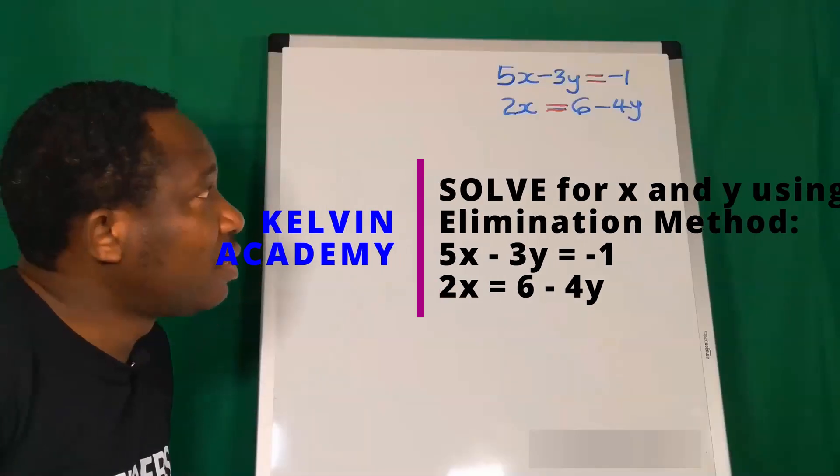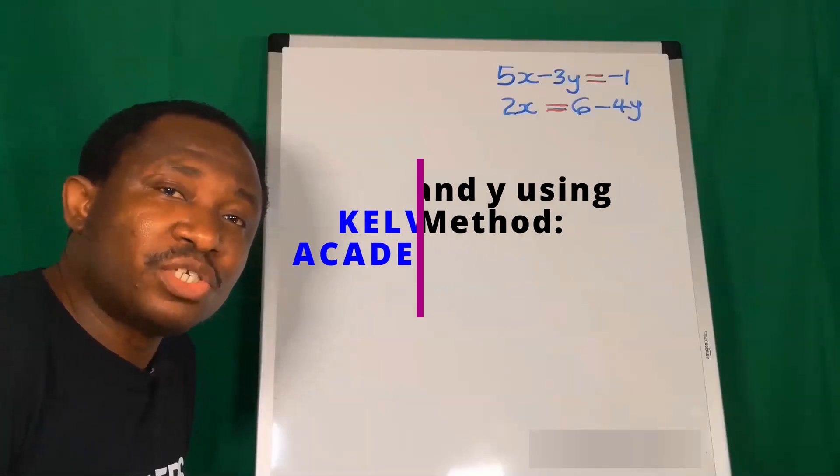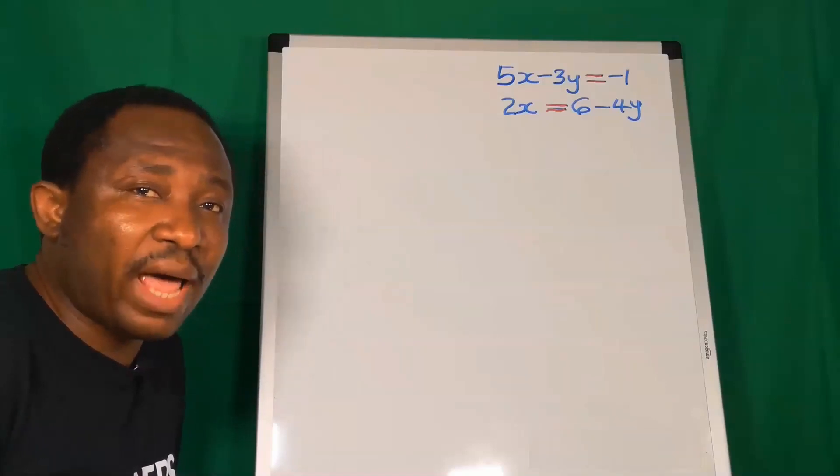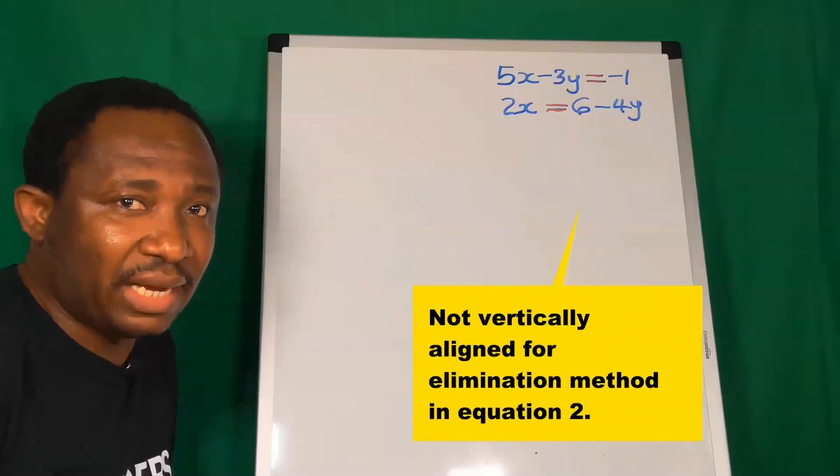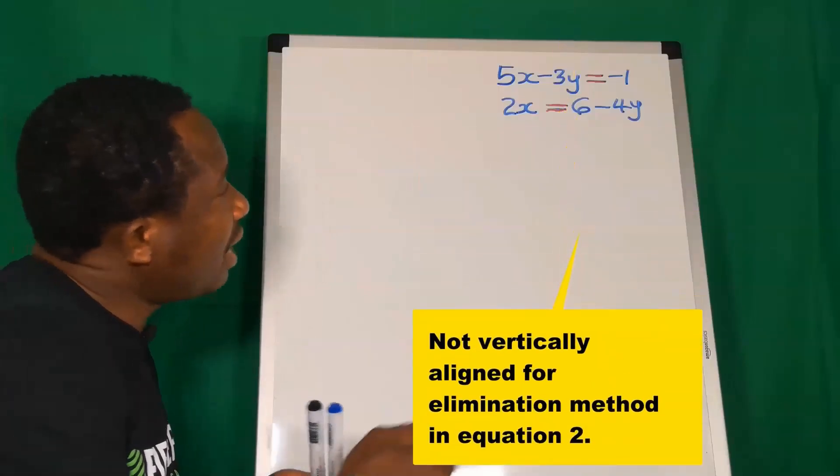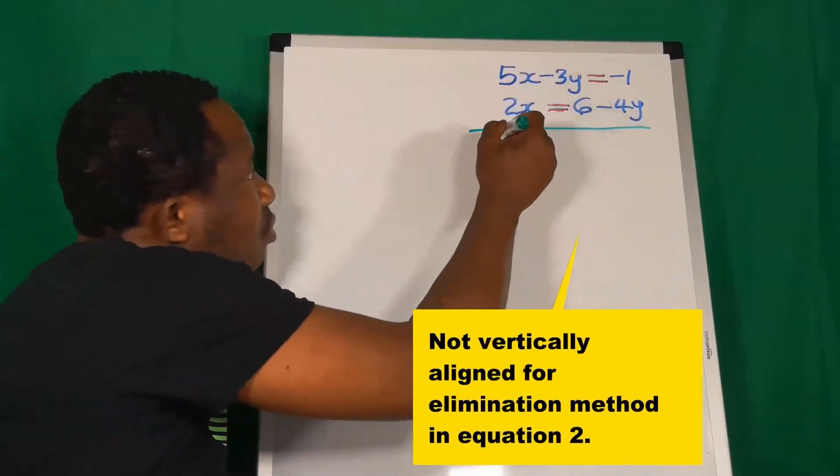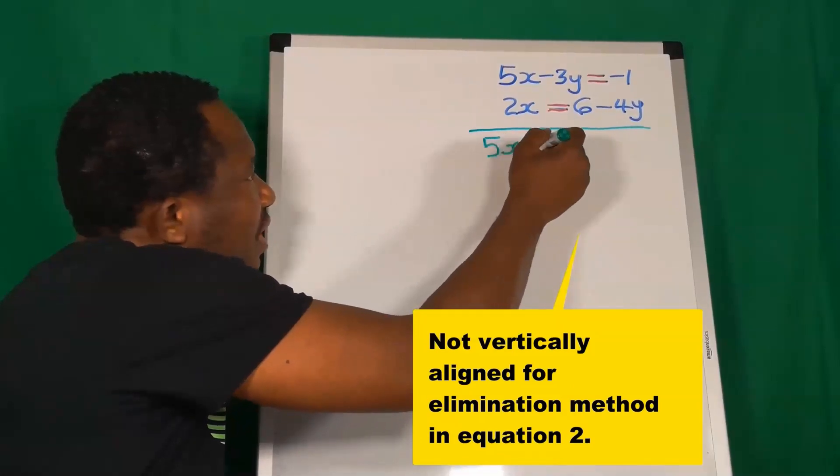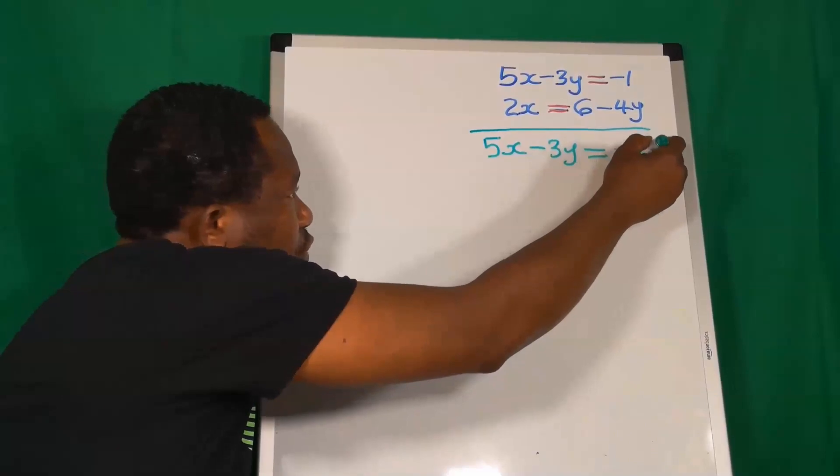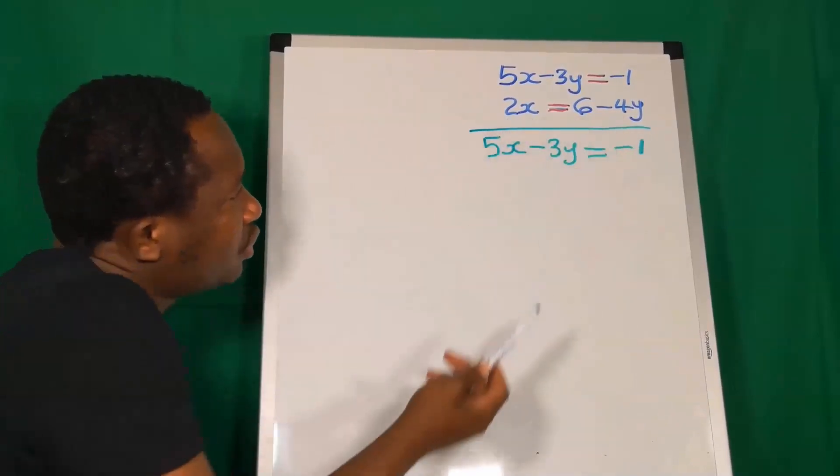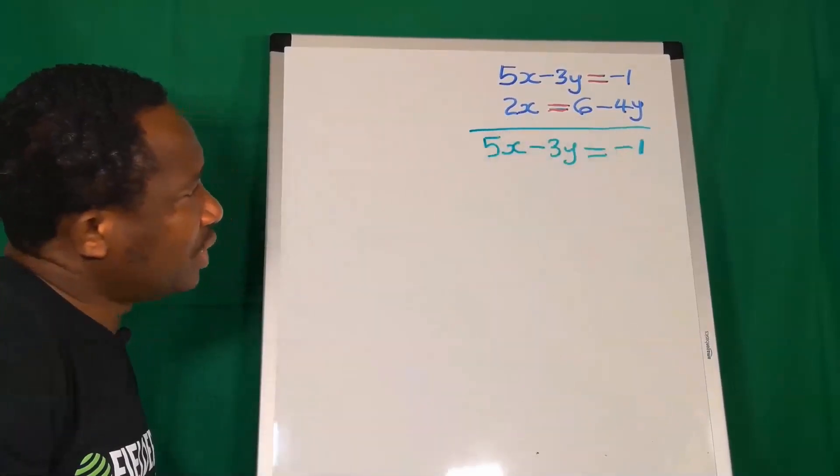Before we solve this, firstly, we're going to check if x and y in equation 1 and 2 are vertically aligned. Here, we have that in equation 1, 5x minus 3y on the other side we have minus 1. But in equation 2, we see that we need to rearrange.